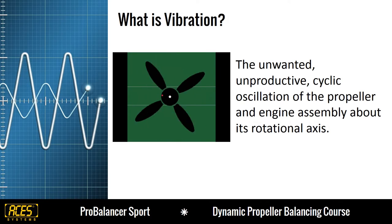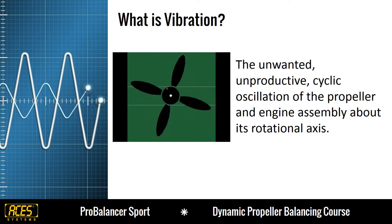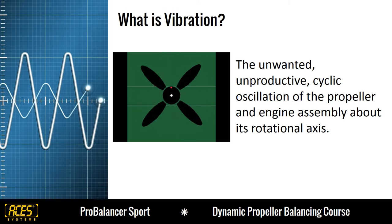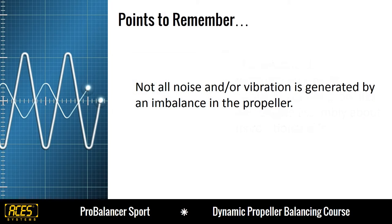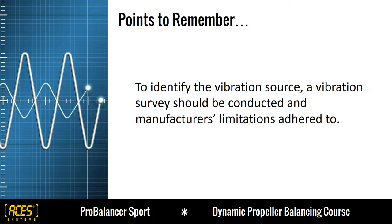Let's begin by defining vibration as the unwanted, unproductive, cyclic oscillation of the propeller and engine assembly about its rotational axis. Remember, however, that there can be many sources of vibration in your aircraft beyond just an imbalance in your propeller. To identify the vibration source, a vibration survey should be conducted, and manufacturer's limitations adhered to.